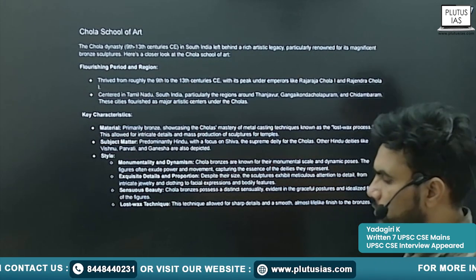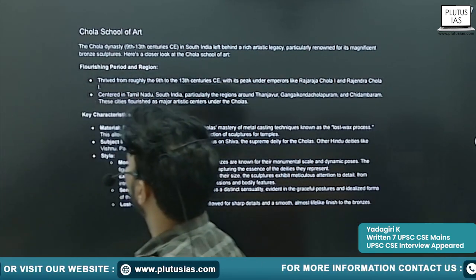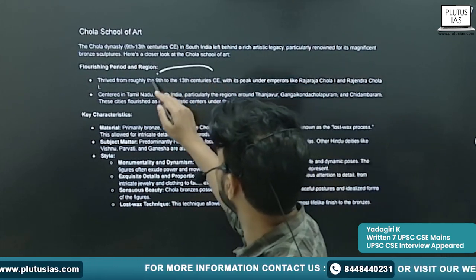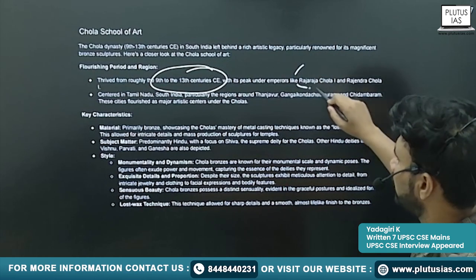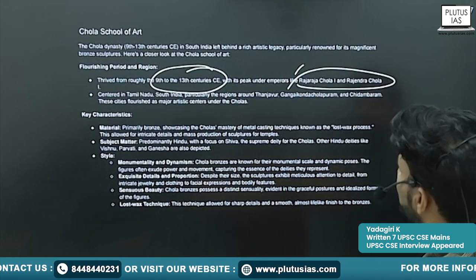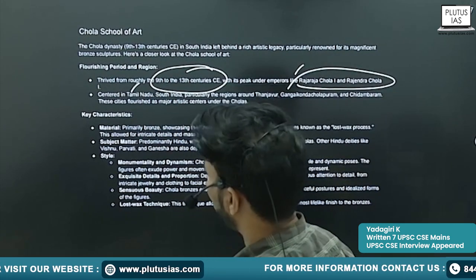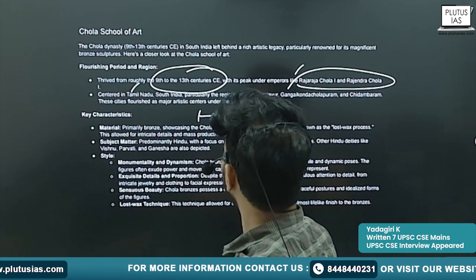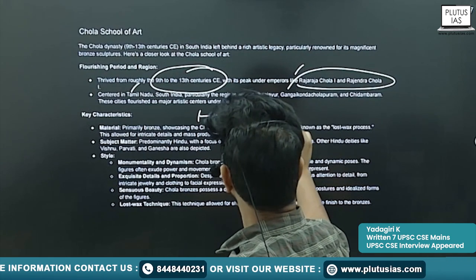This is about the Pala School of Art. Finally, you will see the Chola School of Art. It flourished between the 9th century to 13th century AD. Its peak was during Raja Raja Chola I and Rajendra Chola I. It is centered around Tamil Nadu, and its best depiction is the bronze idols of Nataraja.